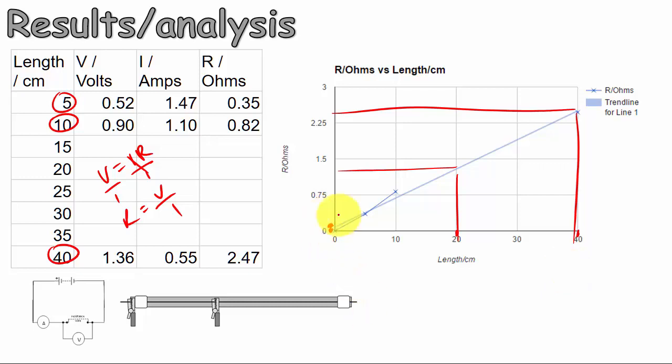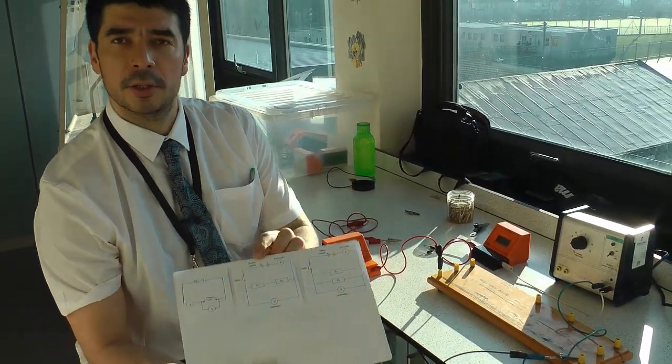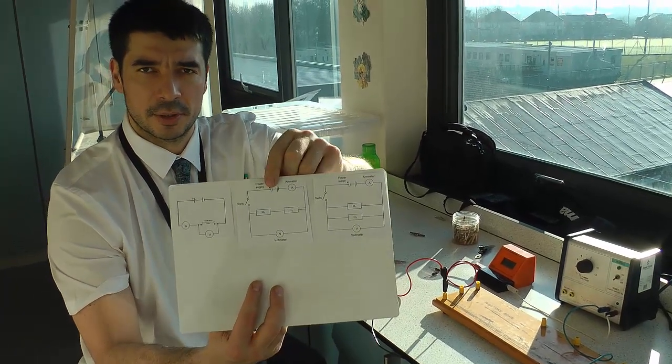So plenty to think about, some errors to try and reduce. Go and have a go yourselves. Okay, so now we've done the resistance of a length of wire practical. Let's have a go at doing the two series resistors practical, which looks like this on the sheet.